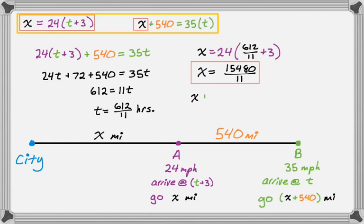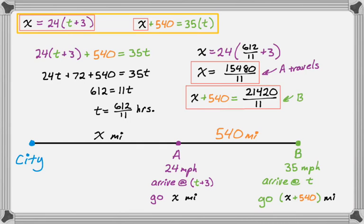And then to figure out B, I need to do X plus 540. So this is how far B travels. And again, I use a calculator. So just to clarify, this is how far A travels. And the other value we calculated, that's how far B travels.